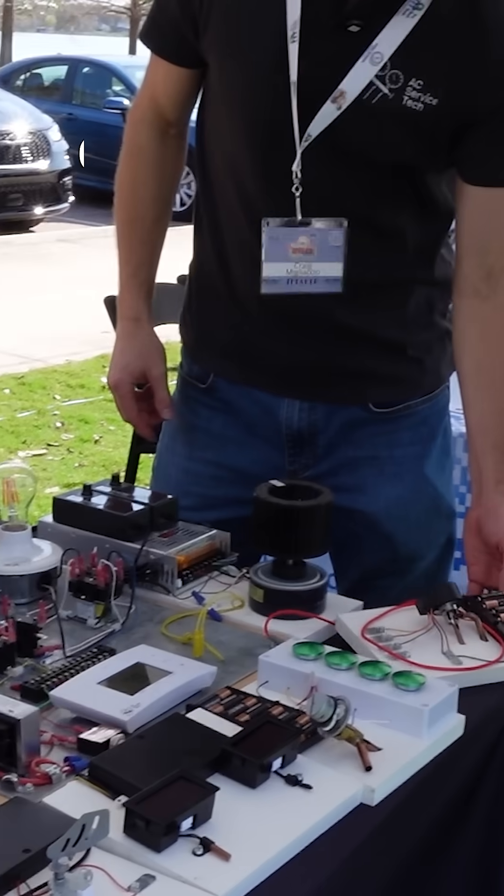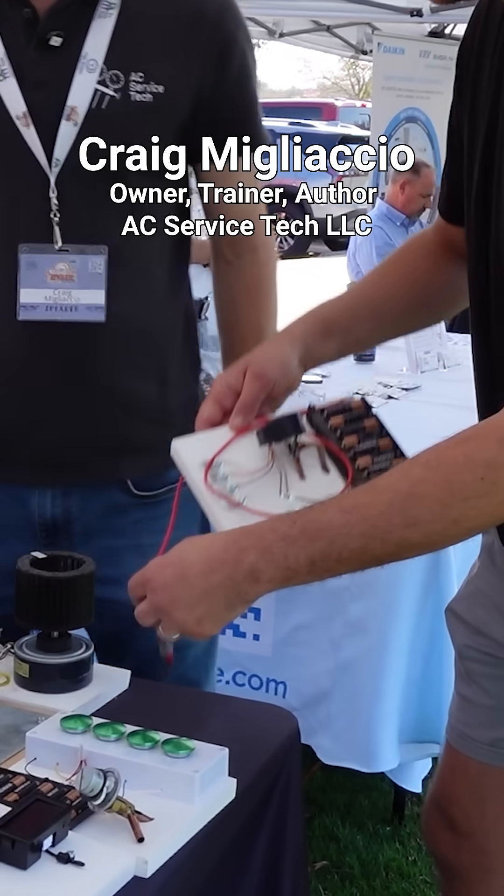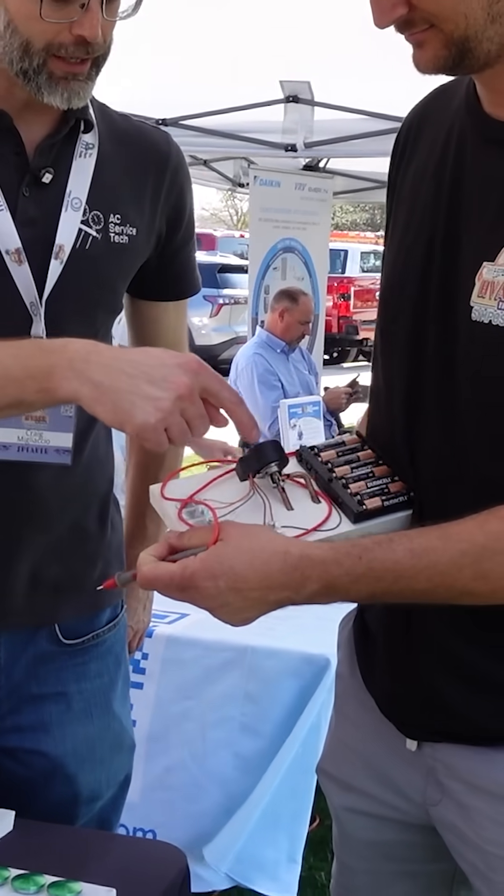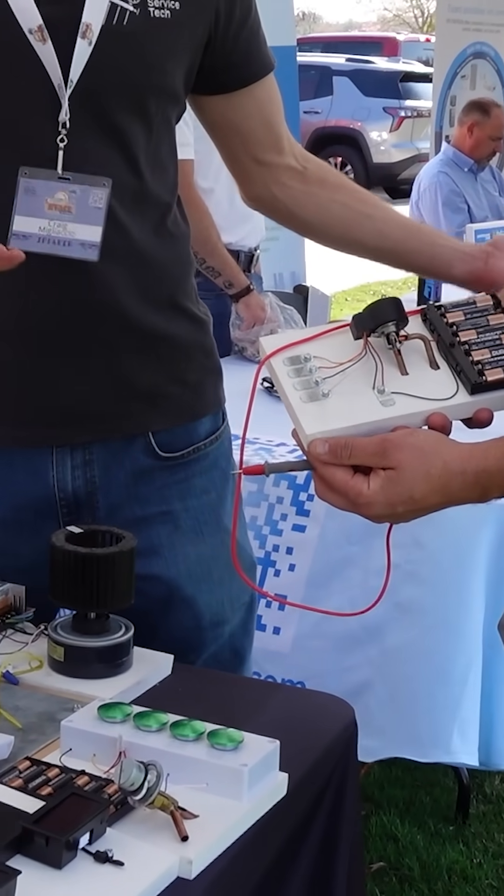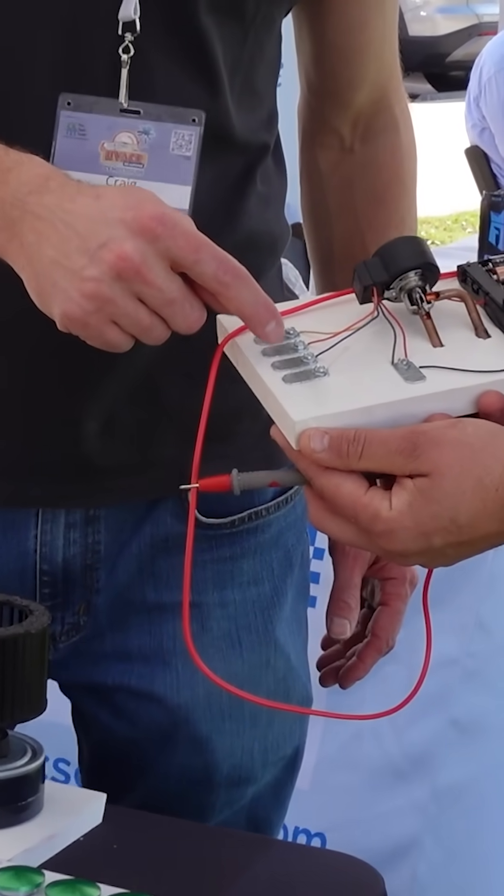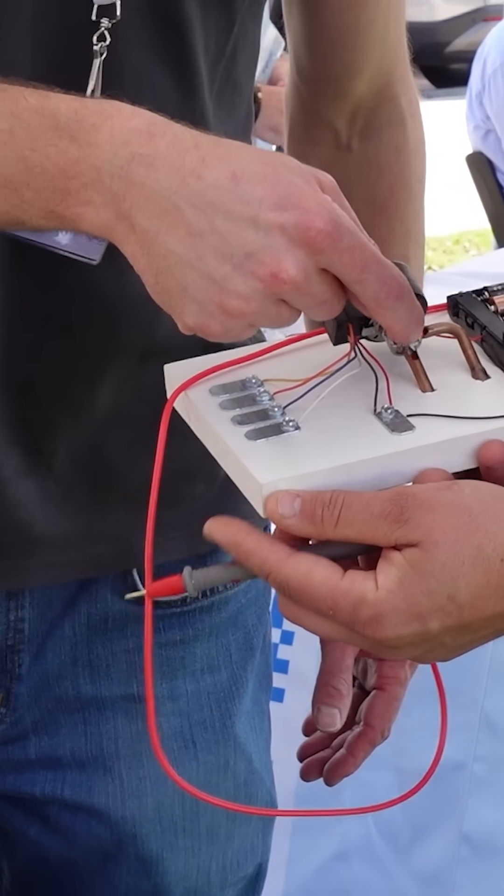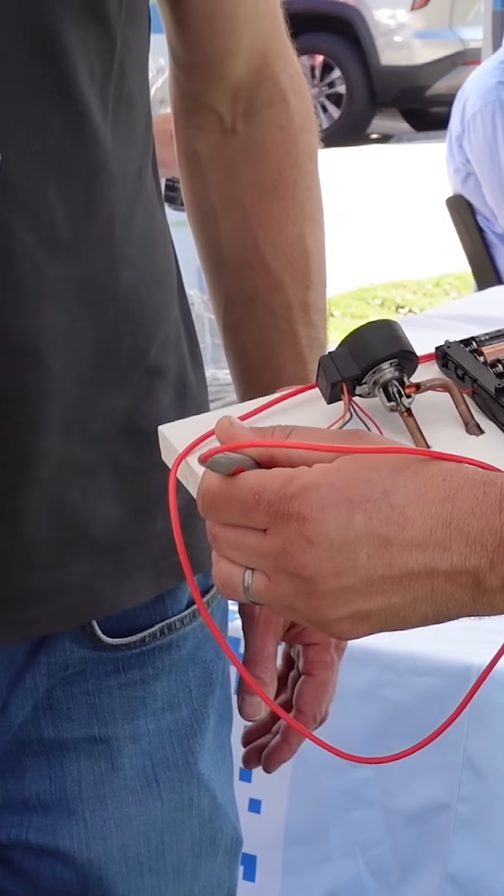This one is showing technicians the different steps of an EEV. So this EEV has like 250 steps and each one of these is a 12 volt pulse. It's going to open or close this little pin position.